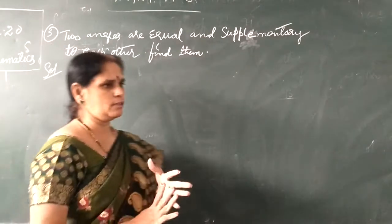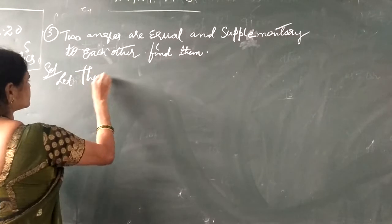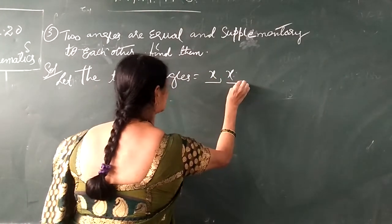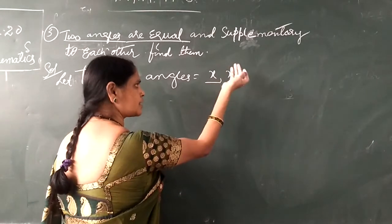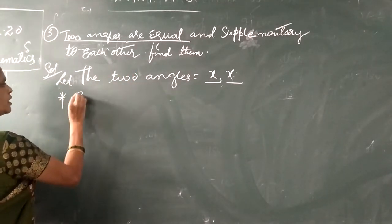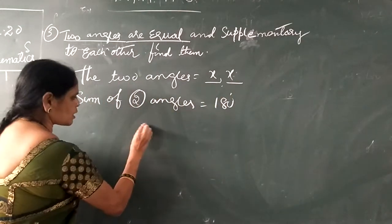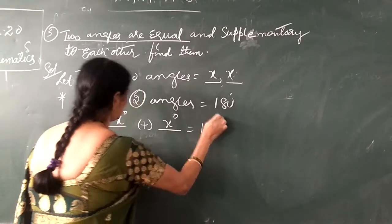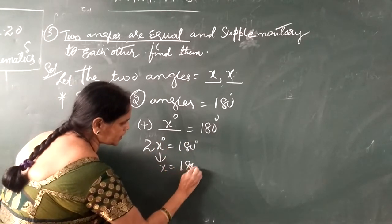We have to find out what are the values of those supplementary angles. Two angles are equal. Let the two angles both be x and x. If I take one angle as x, the other angle is also x. What is the condition for supplementary angle? Sum of two angles is equal to 180 degrees. So x plus x equals 180 degrees. x plus x is 2x, which equals 180 degrees. So x is equal to 180 degrees divided by 2.